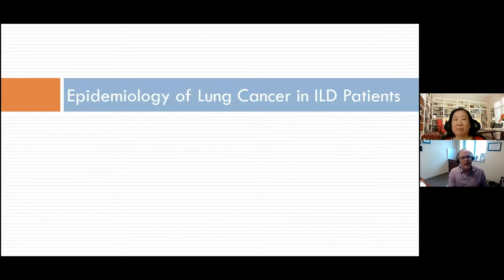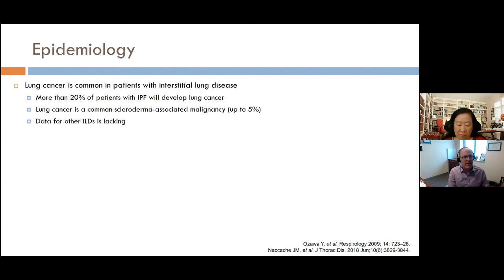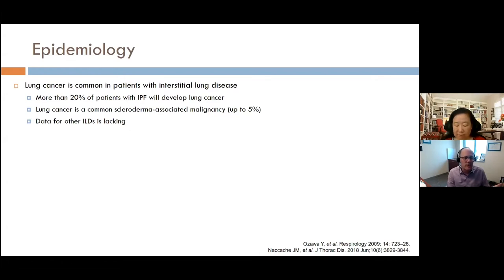Before we go on, let's talk about the epidemiology of lung cancer in patients with interstitial lung disease. Lung cancer is common in our patients, which is really hard. Often when I diagnose patients with IPF or idiopathic pulmonary fibrosis, the first thing they say is, 'Well, it's not cancer, is it?' And I say no — but IPF is still such a serious illness. Then in a small number of those patients, a visit later — a year, three years, five years — I come back and say, unfortunately, you've now developed lung cancer.